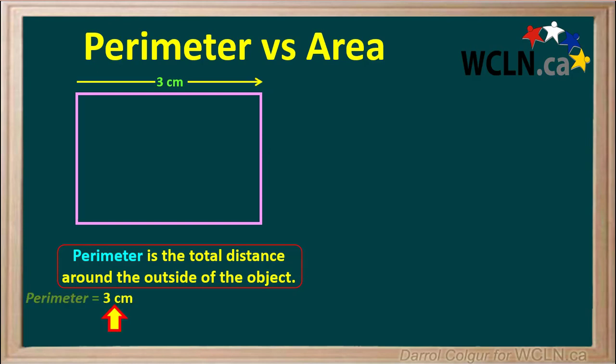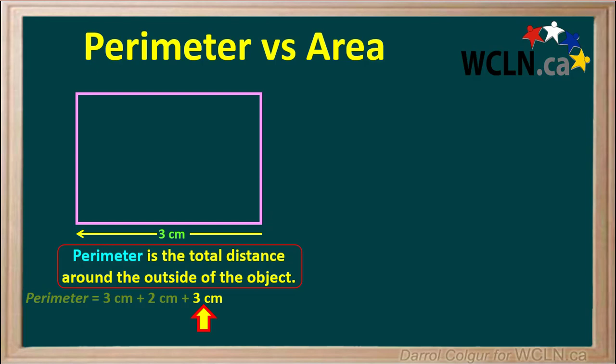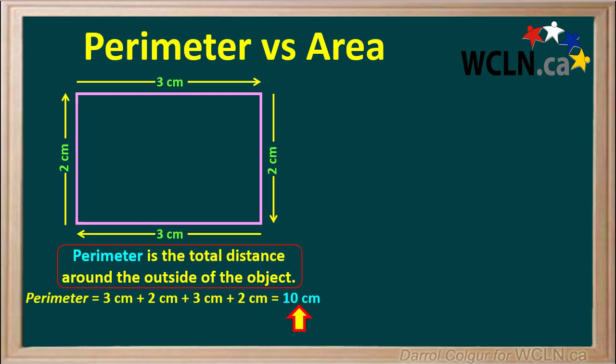We can calculate the perimeter by adding the top, which is 3 cm, plus the right side, which is 2 cm, plus the bottom, which is 3 cm, plus the left side, which is 2 cm. These add up to a total distance of 10 cm. So we can say that the perimeter is 10 cm.